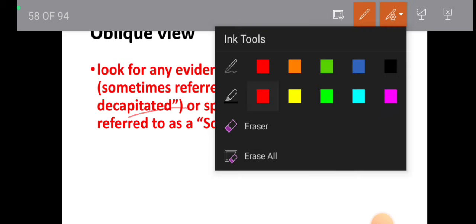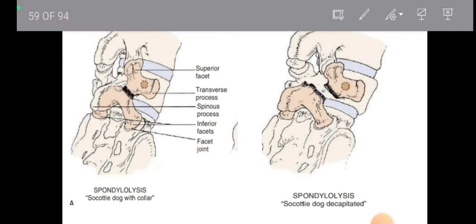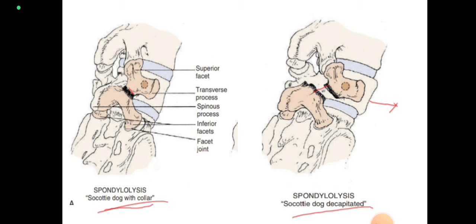In spondylolysis, there is a scotty dog with a collar — a breakage at the pars interarticularis but everything remains in position with no misalignment. It is a stress fracture of the pars interarticularis. In spondylolisthesis, there is a scotty dog decapitated — the scotty dog is breaking down and the vertebra is shifting anteriorly, with a space visible between two fragments.